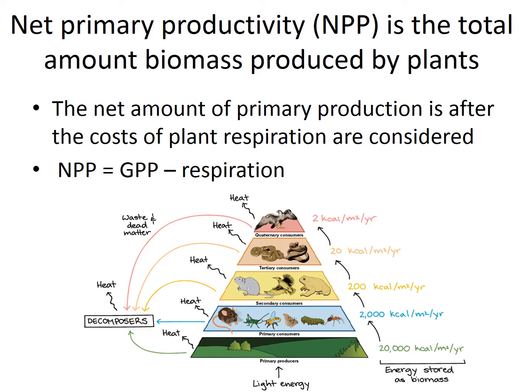Net primary productivity (NPP) is the total amount of biomass produced by plants — simply GPP minus respiration. This is very important because it represents the chemical energy available to primary consumers and is the beginning of energy flow through an ecosystem.